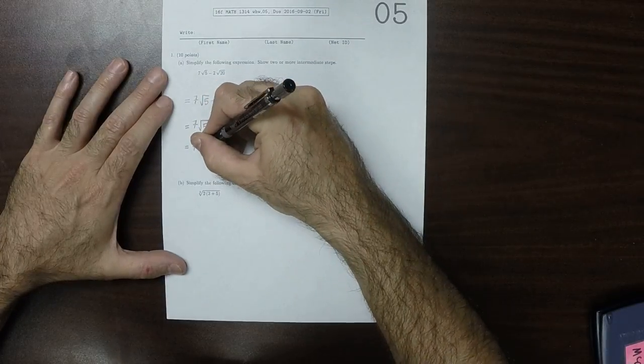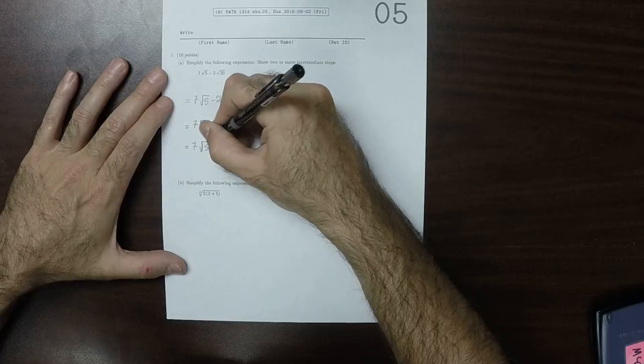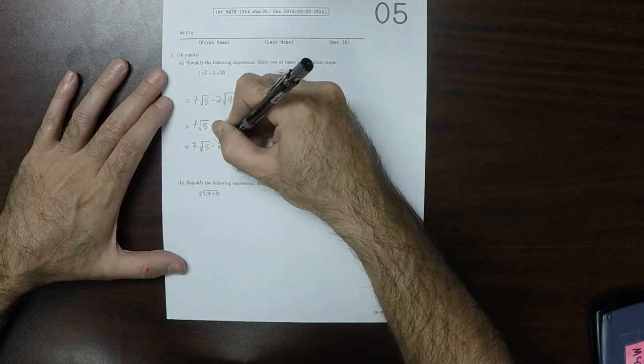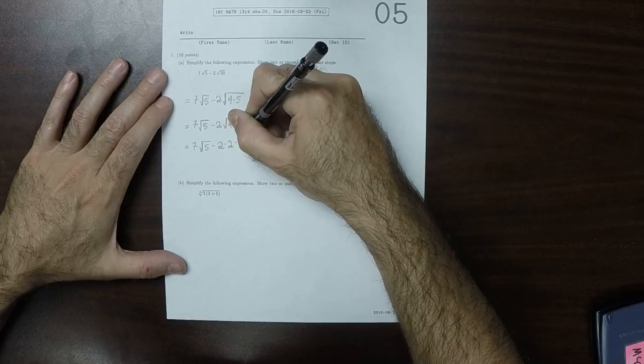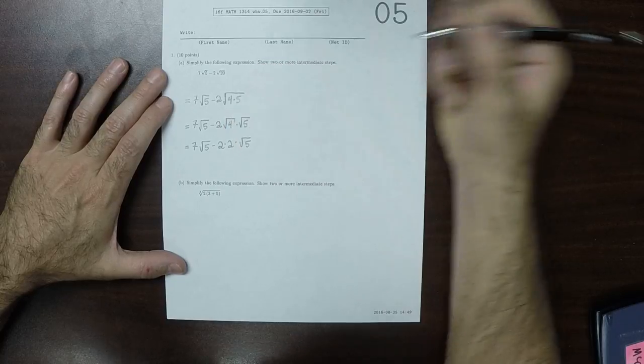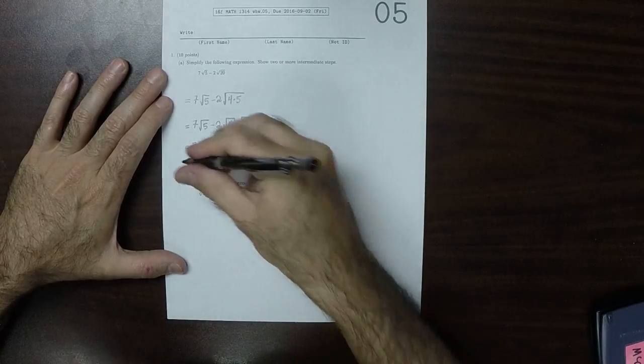So this would be 7 square root 5 minus 2, and then times 2 times square root 5. 2 times 2 is 4.